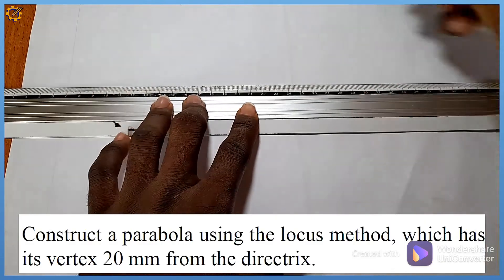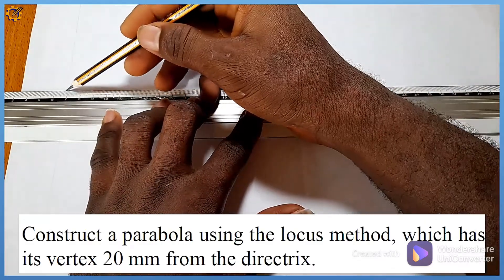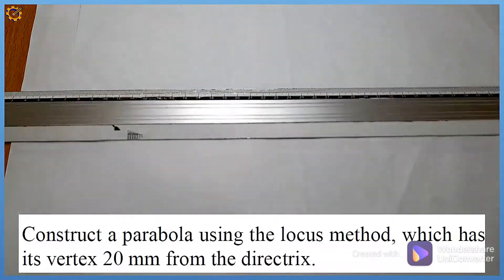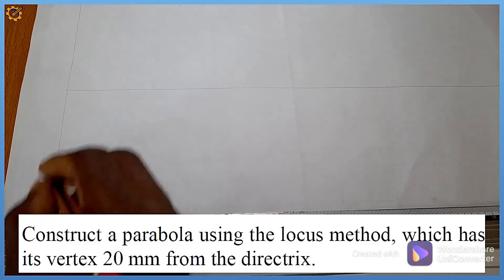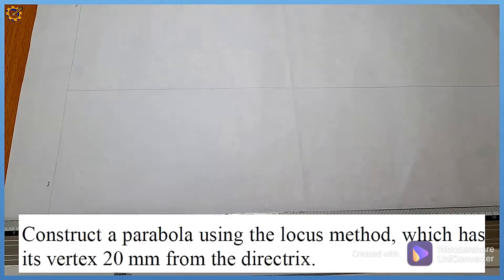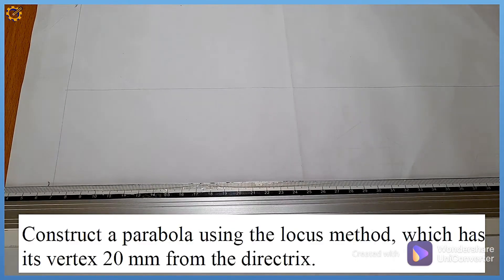As you can see on the screen, this vertical line here is my directrix, DD. We are told that the vertex is 20 mm from the directrix.